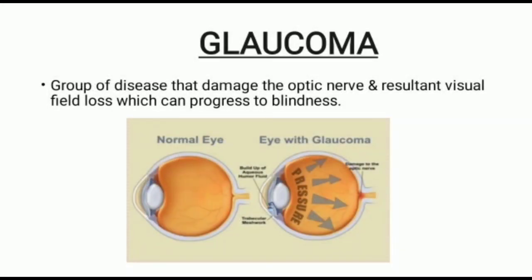Glaucoma is a group of diseases that damage the optic nerve, resulting in visual field loss which can progress to blindness. You can see this figure showing the difference between a normal eye and a Glaucoma eye. In the Glaucoma eye, there is optic nerve damage and increased intraocular pressure in the vitreous cavity. The trabecular meshwork widens, causing a buildup of aqueous humor fluid and increased intraocular pressure.